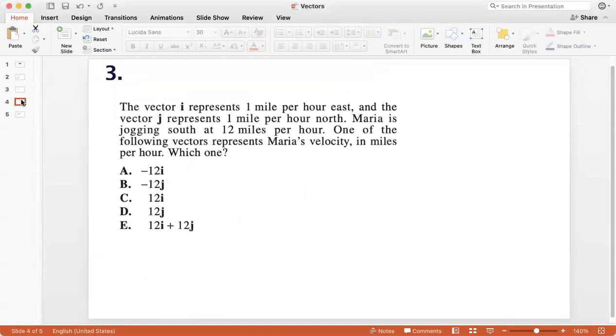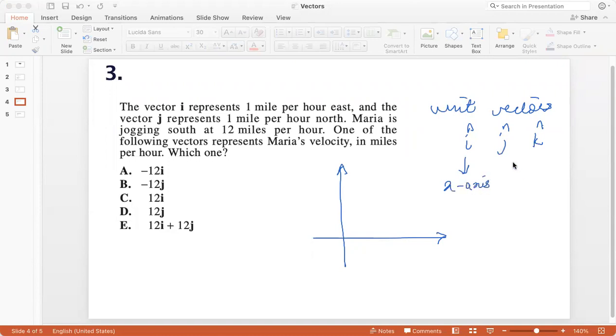Question 3. The vector i represents one mile per hour east and the vector j represents one mile per hour north. So another thing that you should remember is the concept of unit vectors. And unit vectors are denoted by i-cap, j-cap and k-cap. So i-cap is unit vector in the direction of the positive x-axis. j-cap is the unit vector in the direction of the positive y-axis. And k-cap is the unit vector in the direction of the positive z-axis.